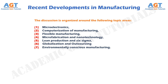Environmentally conscious manufacturing: An inherent feature of virtually all manufacturing processes is waste. The most obvious examples are material removal processes, in which chips are removed from a starting workpiece to create the desired part geometry. Waste in one form or another is a by-product of nearly all production operations.